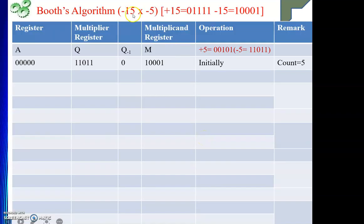Suppose I am taking both the numbers as negative: minus 15 into minus 5. So what is 15? It is 0 1 1 1 0 in binary, and minus 15 will be 1 0 0 0 1 in 2's complement. Then what is 5? Actually 5 is 1 0 1, but I need to represent it using 5 bits, so the sign bit will be 0, giving us 0 0 1 0 1.